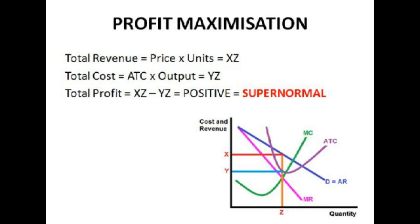Monopolies are generally considered to be bad because they restrict output in order to put up prices. In a monopoly situation, the average revenue curve is going to be half as steep as the marginal revenue curve. We know that for profit maximisation, marginal cost needs to equal marginal revenue. You can see on that diagram there, this occurs at price X, so we're producing quantity Z but selling it at price X, since that's the location on the demand curve. Demand is equal to average revenue, and in perfect competition the average revenue curve and the marginal revenue curve would be the same, but in a monopoly they're two different curves — the marginal revenue curve is twice as steep.